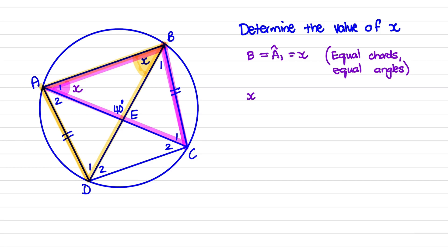Then we can say that x plus x plus 40 degrees is equal to 180 degrees, and the reason is sum of angles in a triangle. That means that 2x is equal to 180 minus 40 degrees, which is 140 degrees.